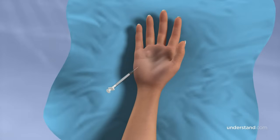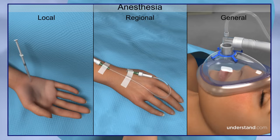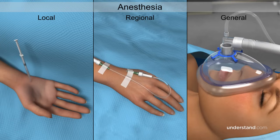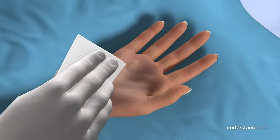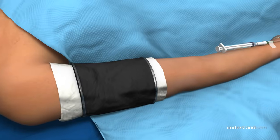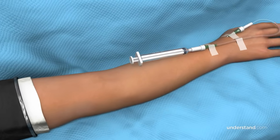Local, regional, or general anesthesia will be administered to prevent the sensation of pain. The hand will be cleansed and draped, and a tourniquet, which is similar to a blood pressure cuff, is applied to your arm or forearm to prevent bleeding during the procedure.